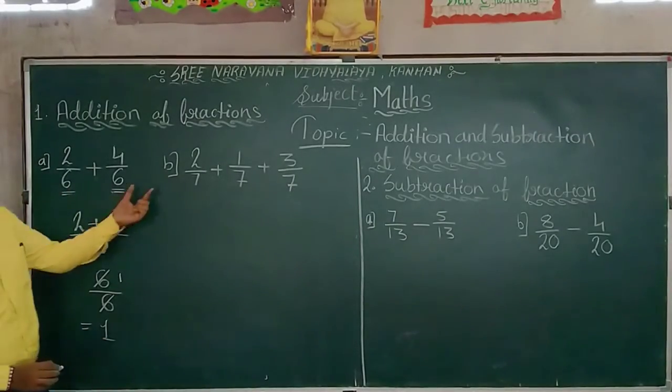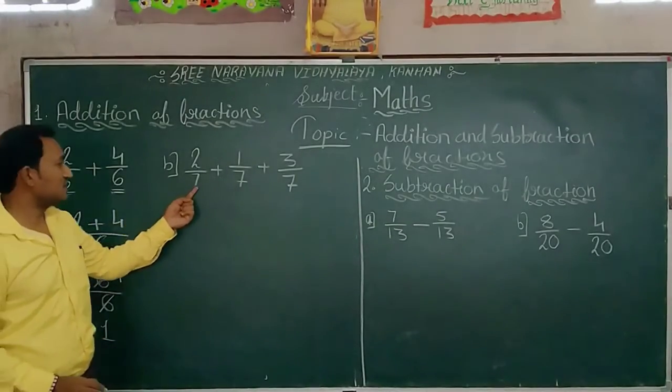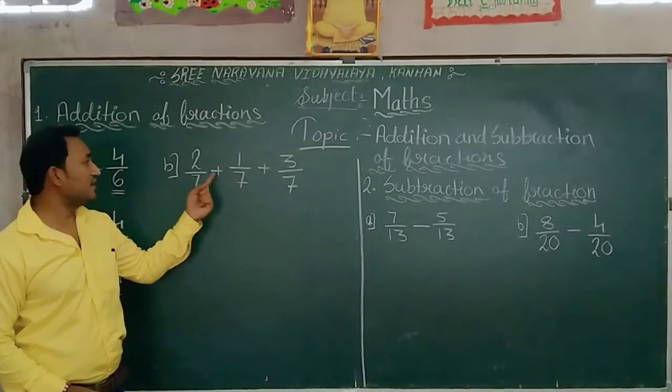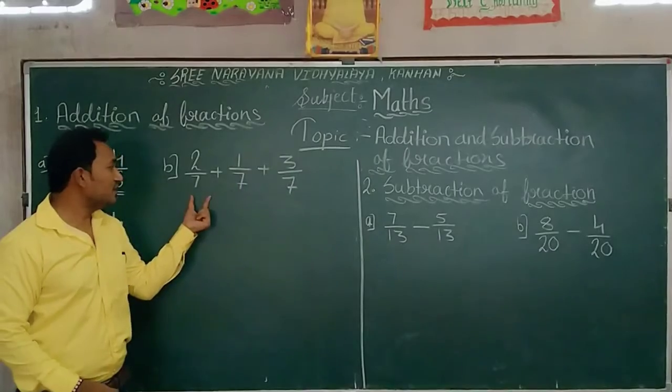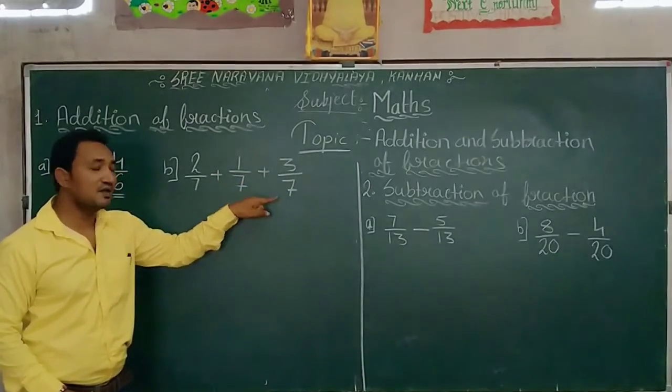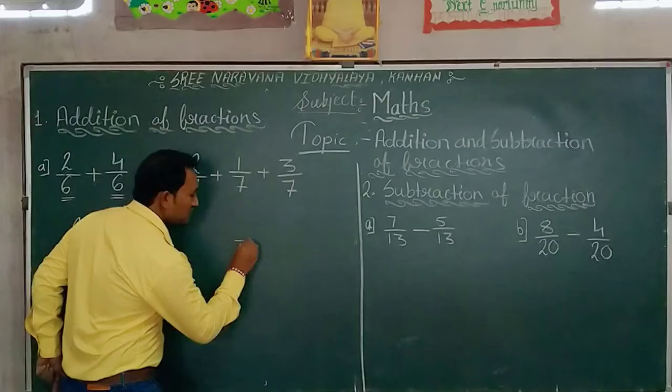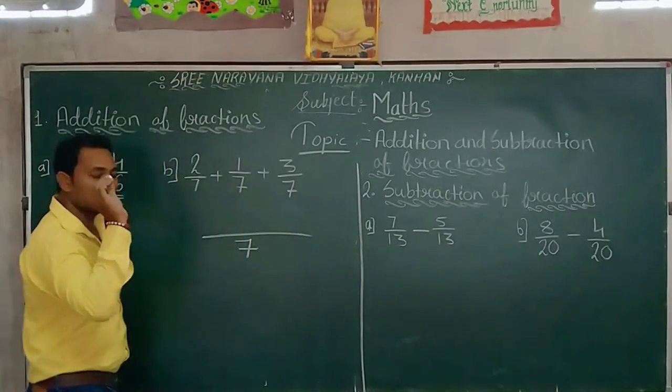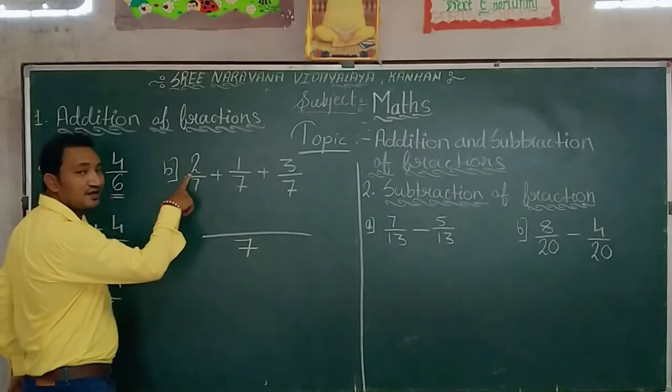Here the second problem, look here. 7 is again our denominator and the numerators are different. When denominators are equal and the numerators are different, in this condition we will write denominator as it is like this. Then we will add numerators.